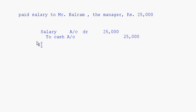Whether it is rent, wages, interest paid, or commission paid — all these will be a nominal account only, and the entries will follow the same pattern. If you are paying rent, it is rent to cash; if you are paying wages, it is wages to cash. Narration: being salary paid.